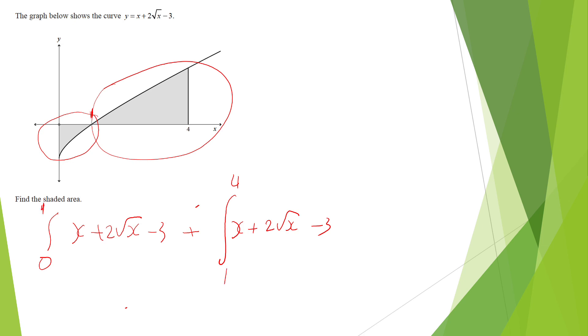Now I'll integrate. Again, I'll do my integrating on the side. So I'm preparing my curve to be integrated first. Then I'll integrate, which is x squared over 2, plus 2, x to the 3 over 2, over 3 over 2, minus 3x. Simplify before I...